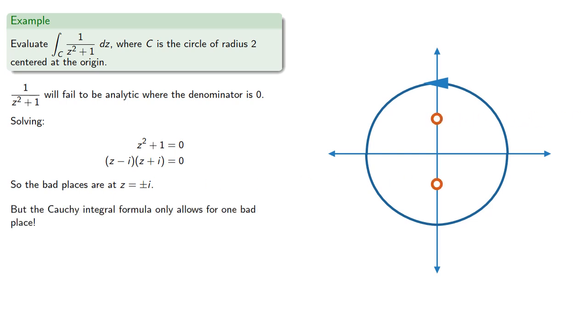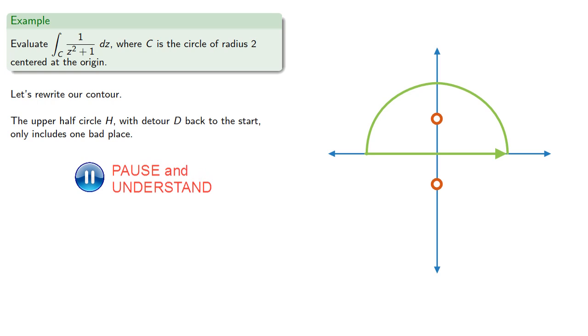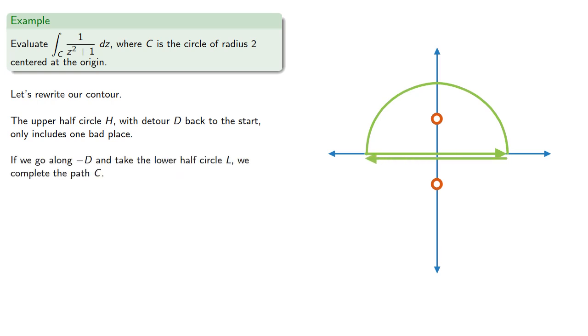But the Cauchy integral formula only allows for one bad place. So the upper half circle H with detour D back to the start only includes one bad place. If we go along negative D and take the lower half circle L, we complete the path C.